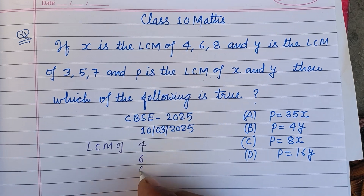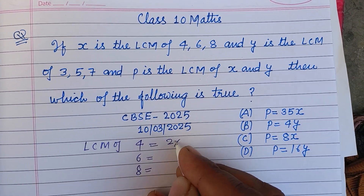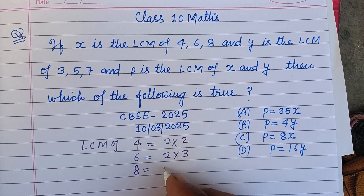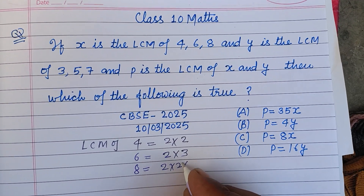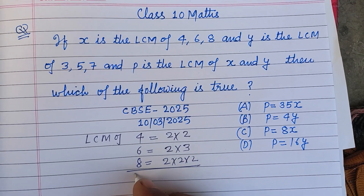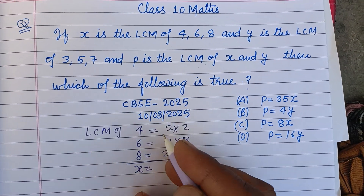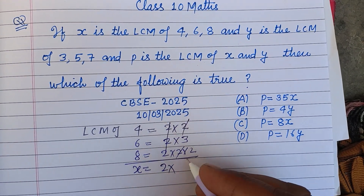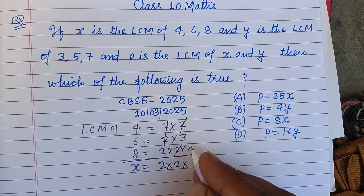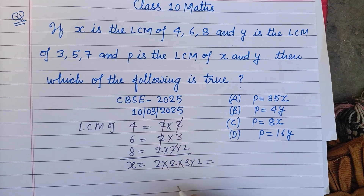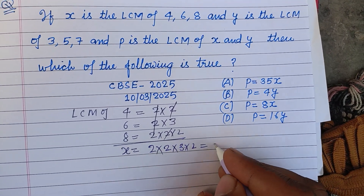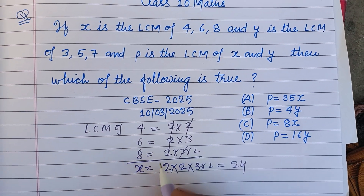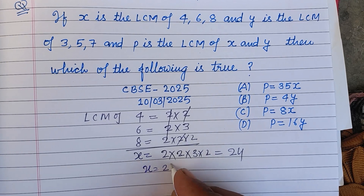LCM of 4, 6, and 8: 4 can be written as 2×2, 6 can be written as 2×3, and 8 can be written as 2×2×2. So the LCM, which is given to us as x, is 2³×3 = 24. Therefore x equals 24.